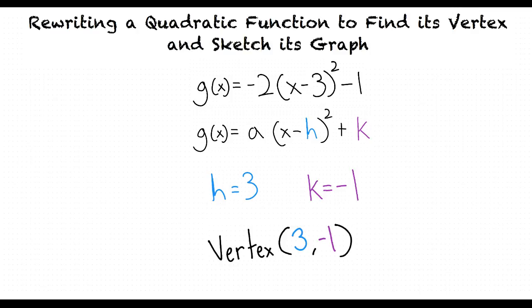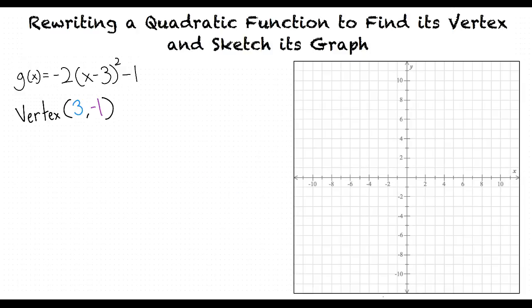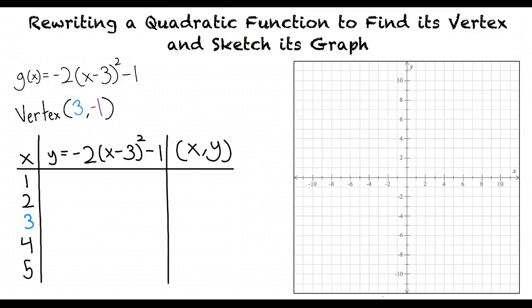Now that we have found our vertex, how will we graph the function? Now that we have our function in a new form, and we know our vertex, we will make a chart of points that we will use to graph our function. We will first pick two x values to the left of our vertex, and two x values to the right of our vertex.